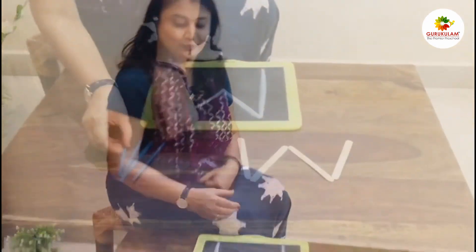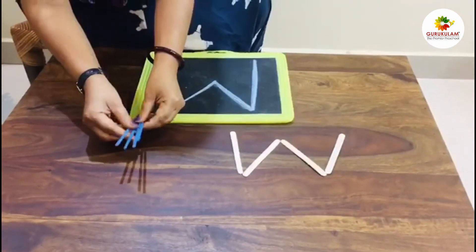And do you know kids what is the phonic sound of W? W, W, W, W, W, W. And now I will show you how to make alphabet W.